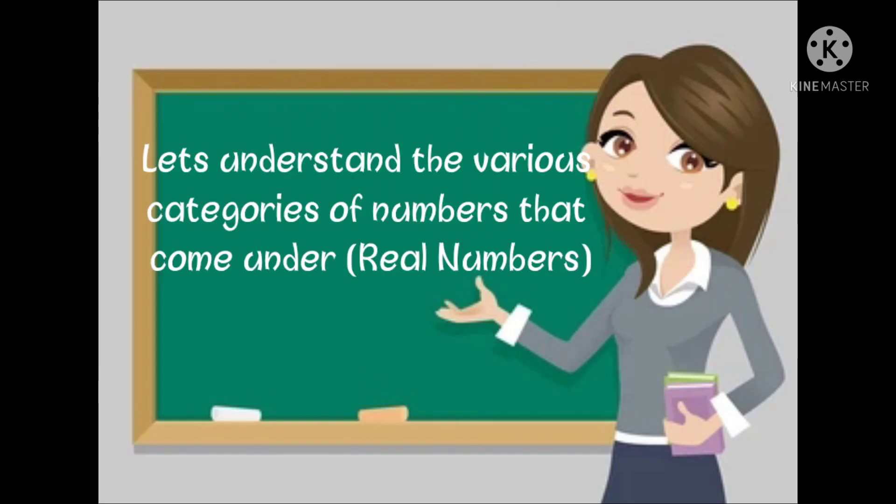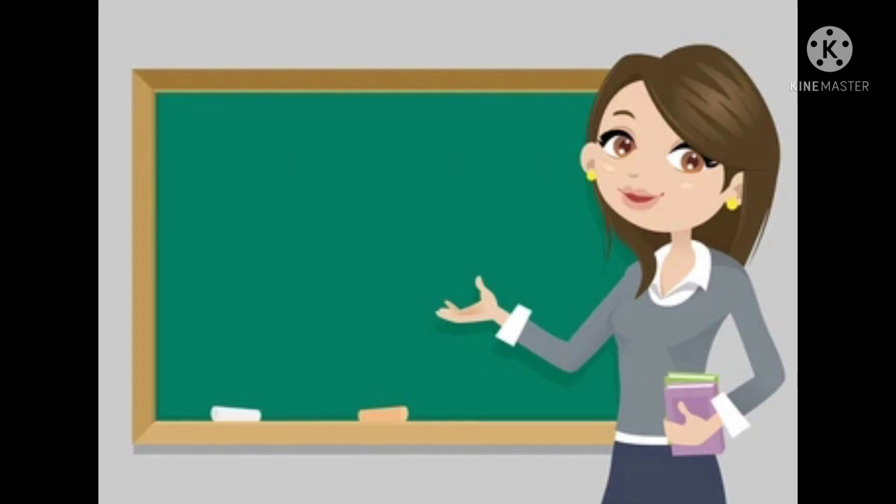Let's understand the various categories of numbers that come under real numbers. Real numbers can broadly be classified into rational numbers and irrational numbers.